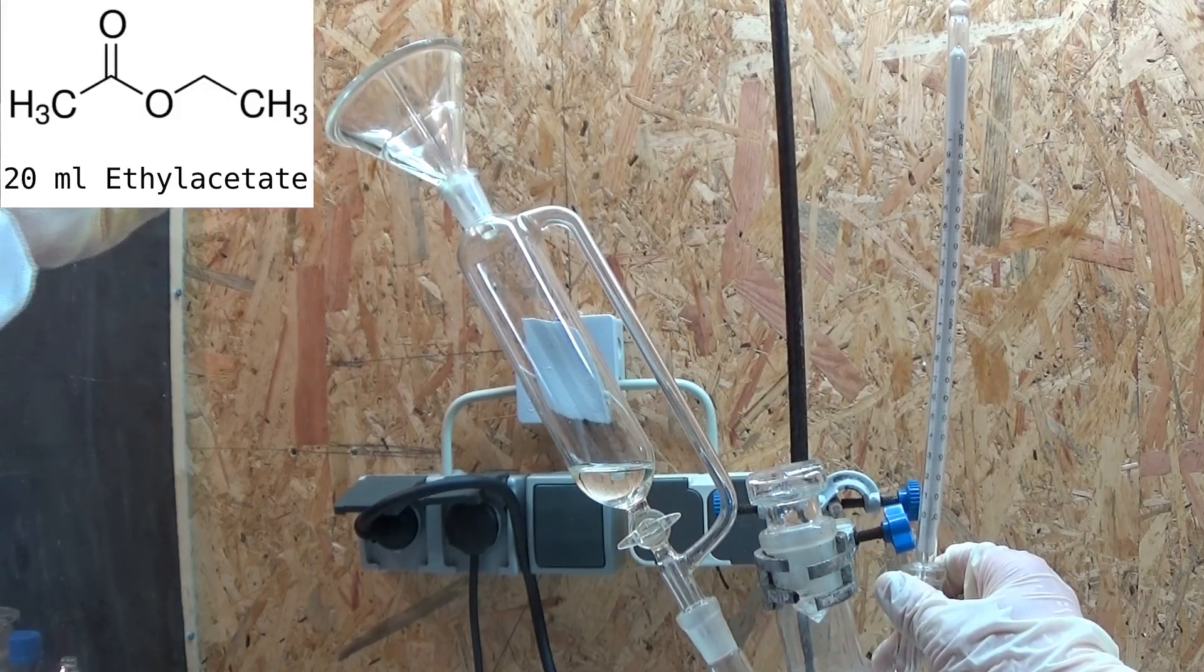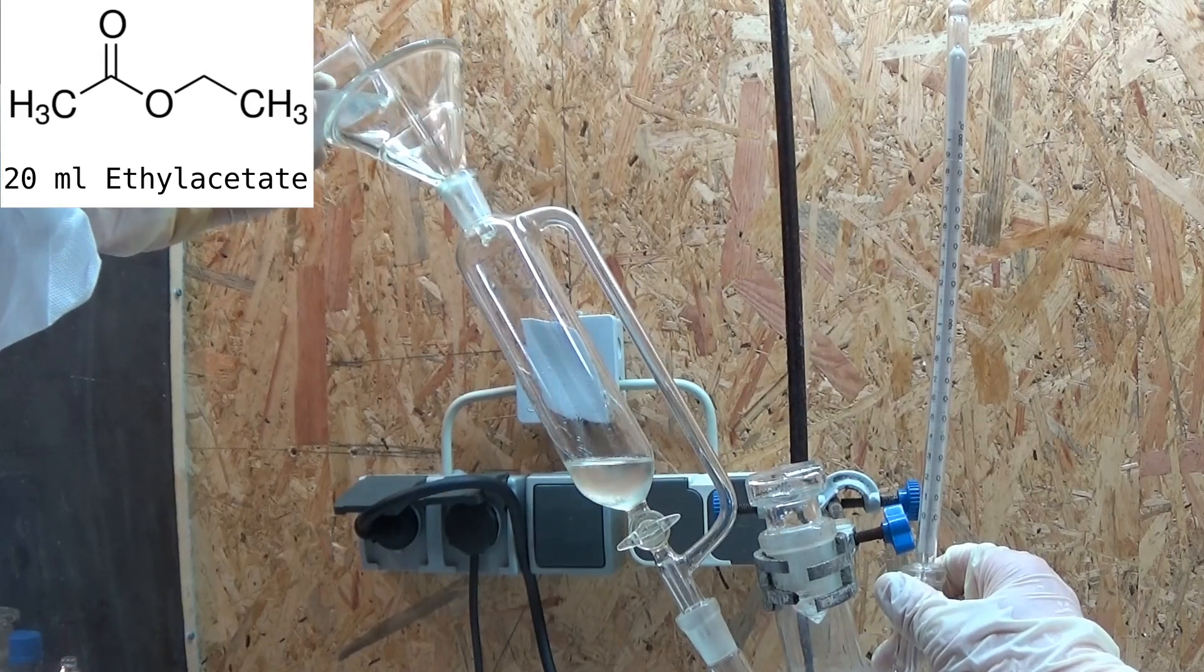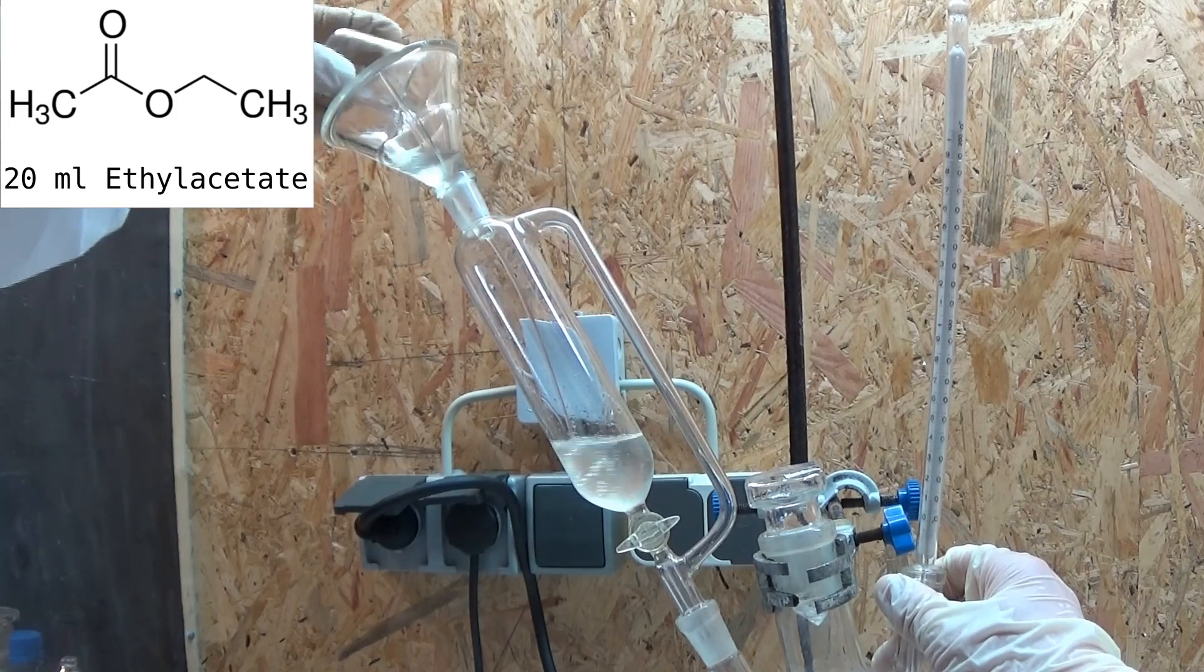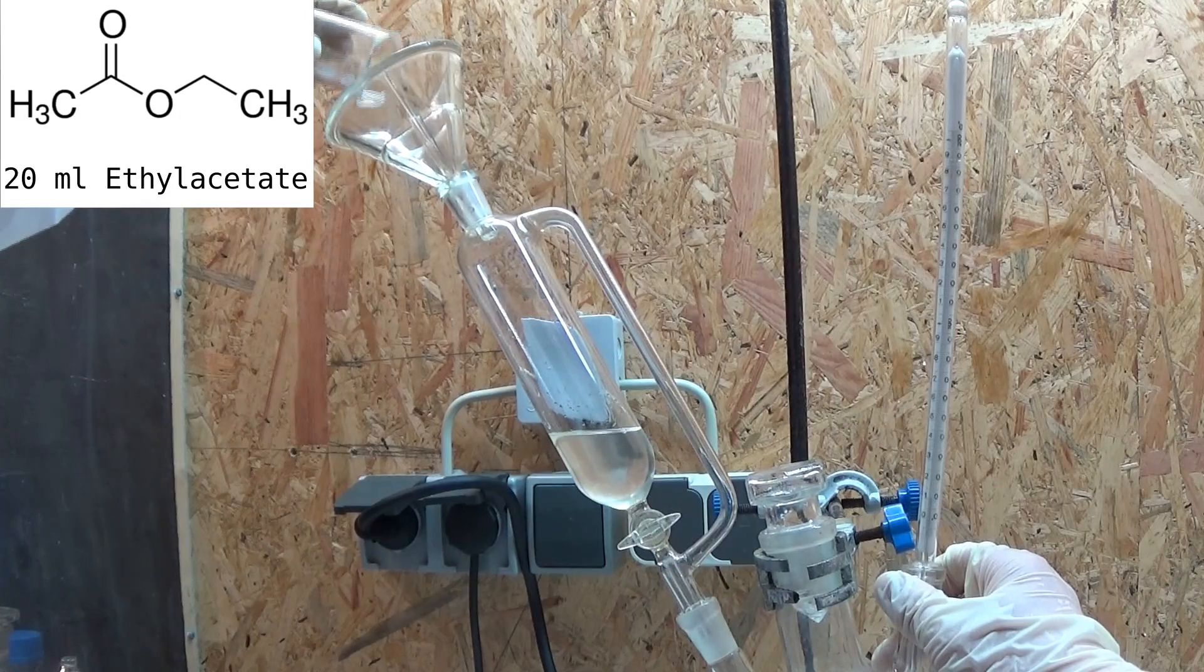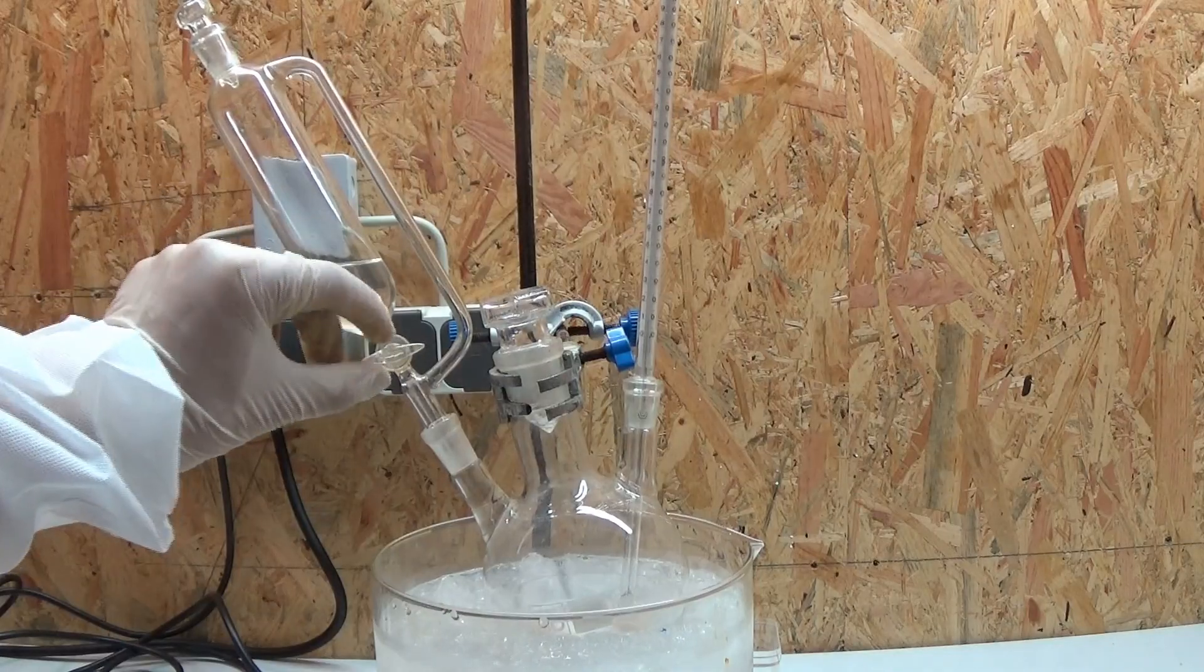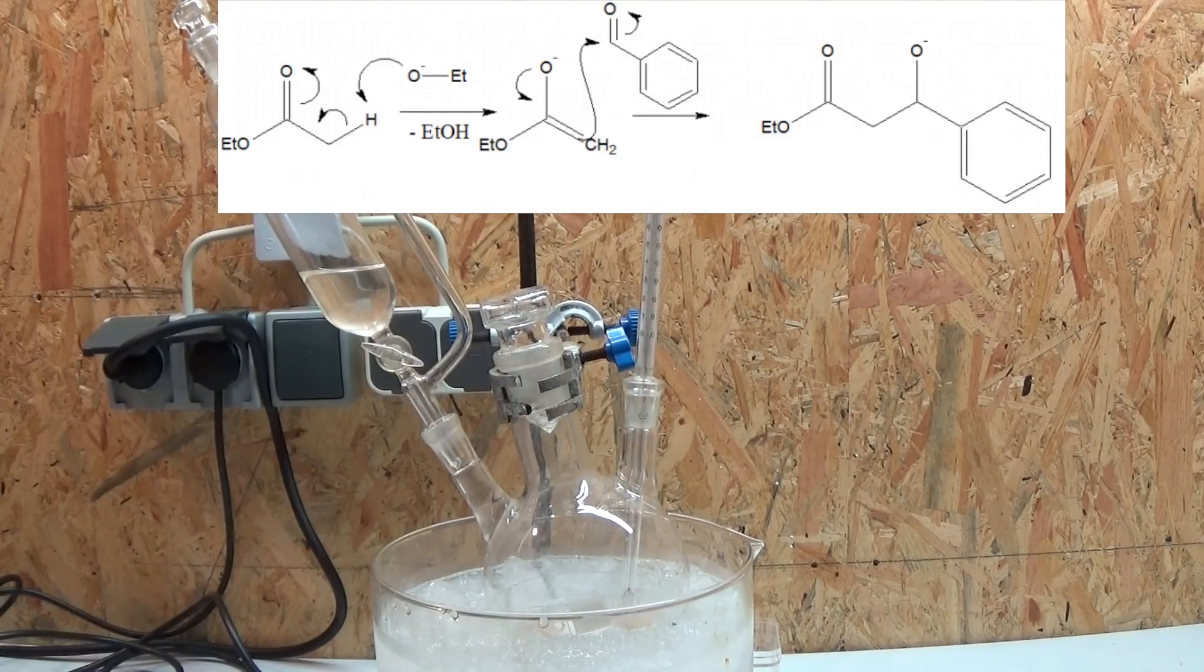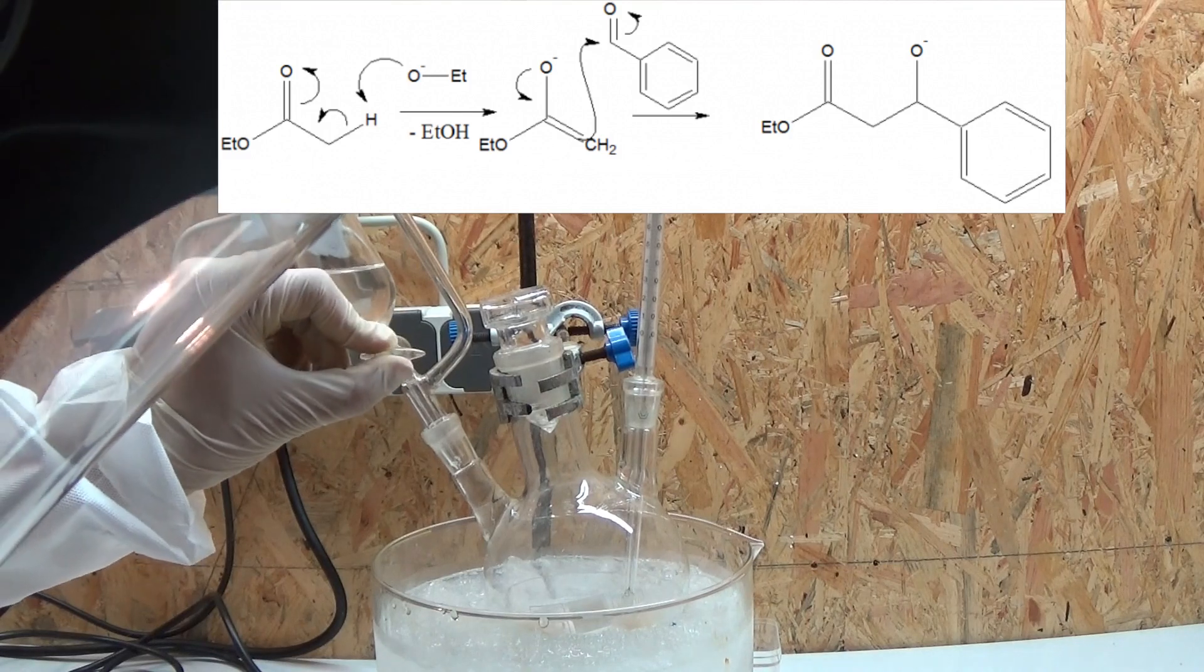To the benzaldehyde we add another 20 milliliters of ethyl acetate to reduce the concentration of the benzaldehyde we are adding, thus decreasing the heat produced by every drop we add to the reaction mixture which grants us a better temperature control. Now we slowly add the benzaldehyde ethyl acetate solution to the reaction mixture in a way that the temperature remains under 5 degrees centigrade.